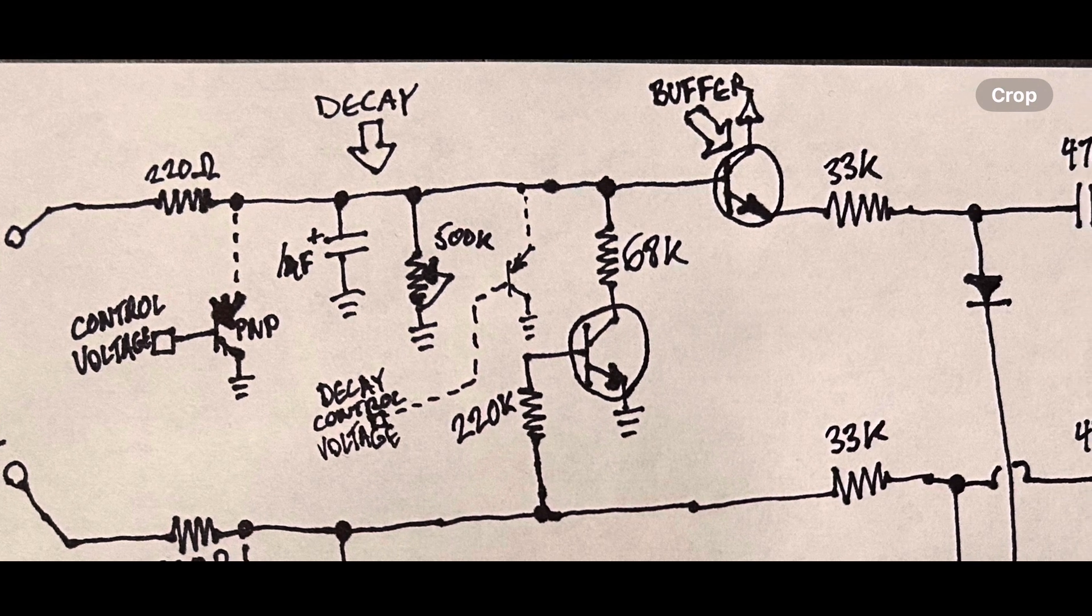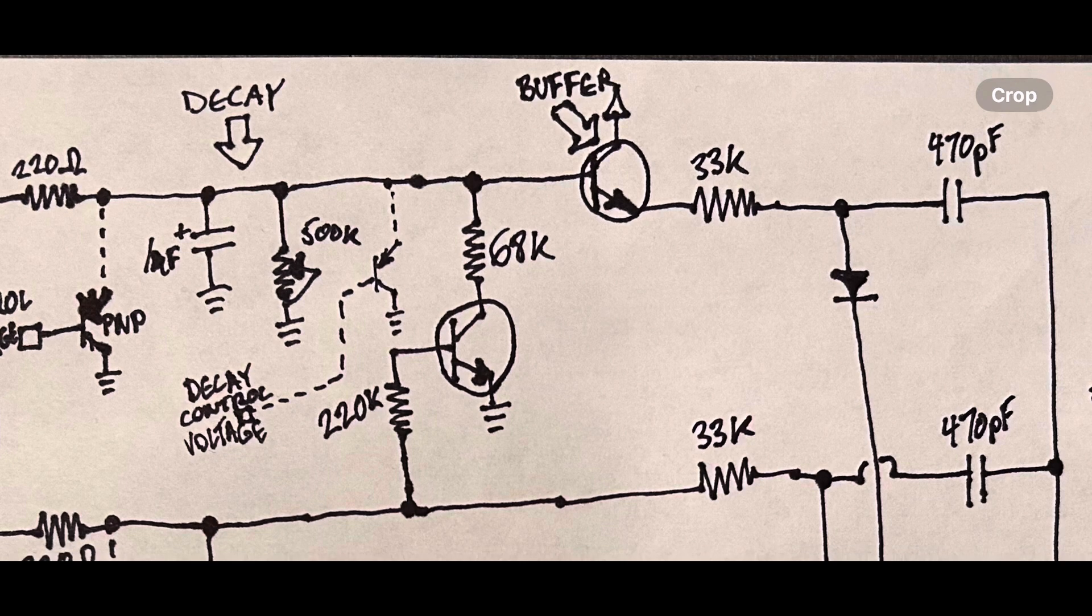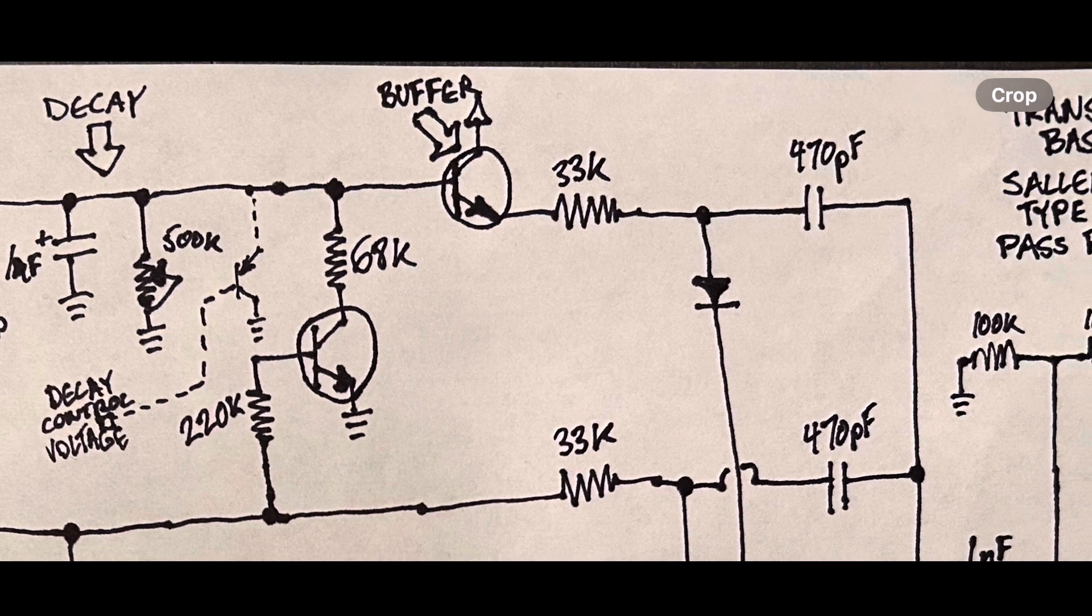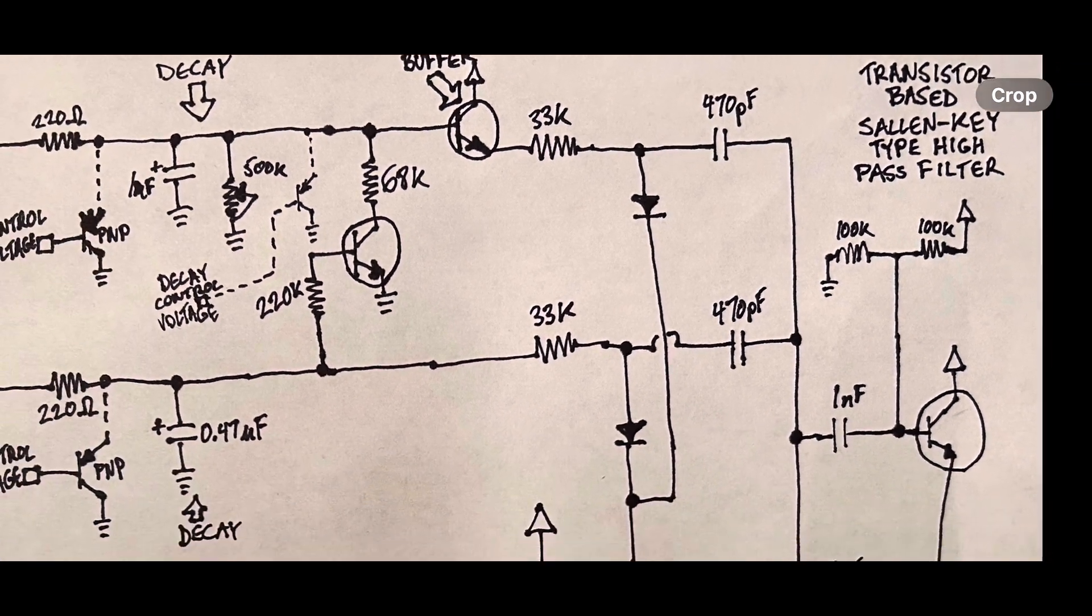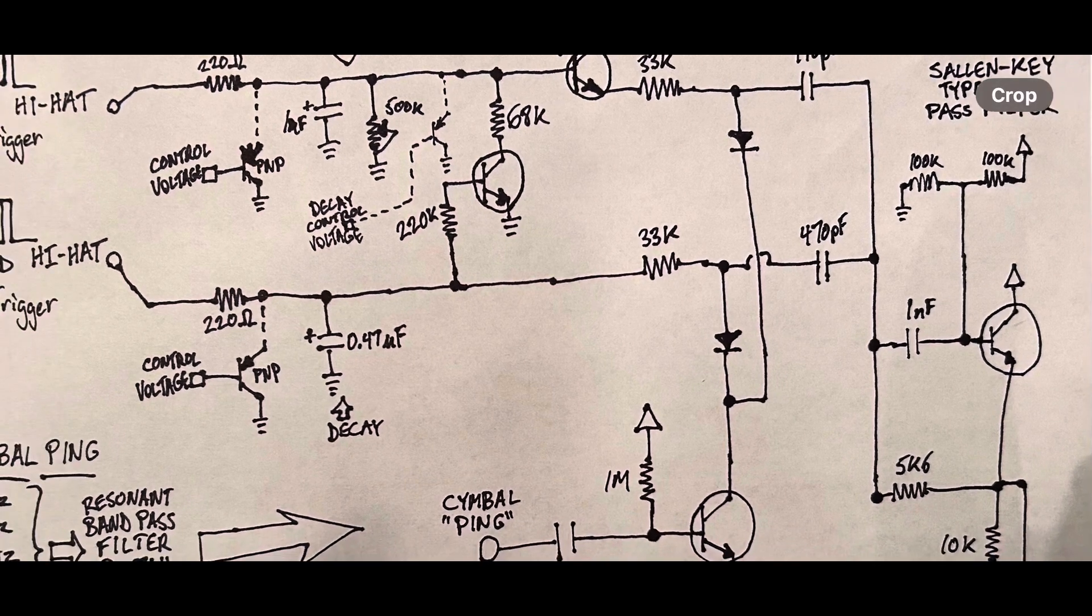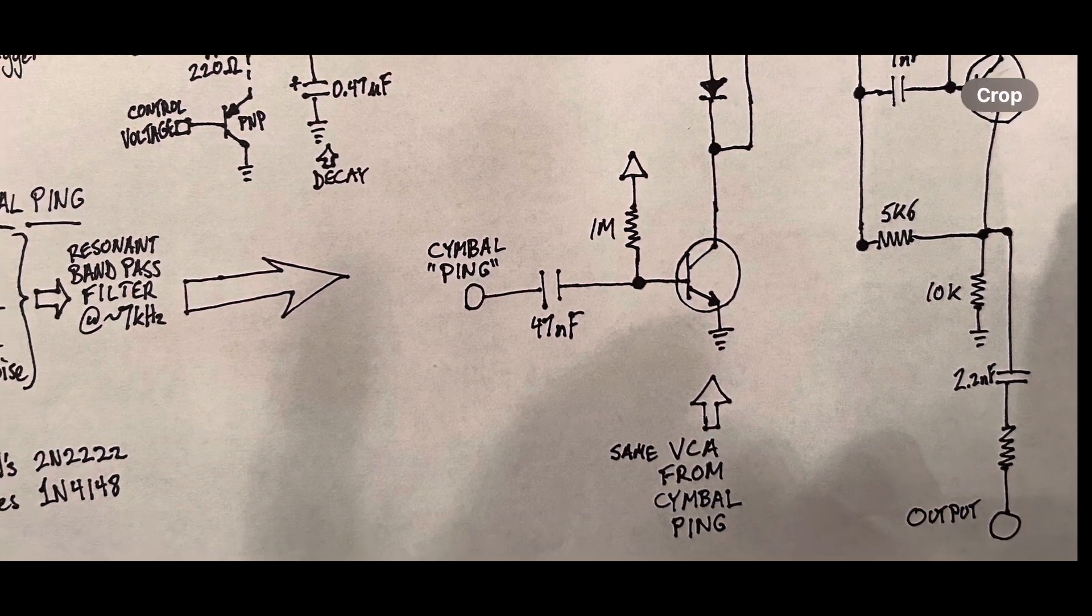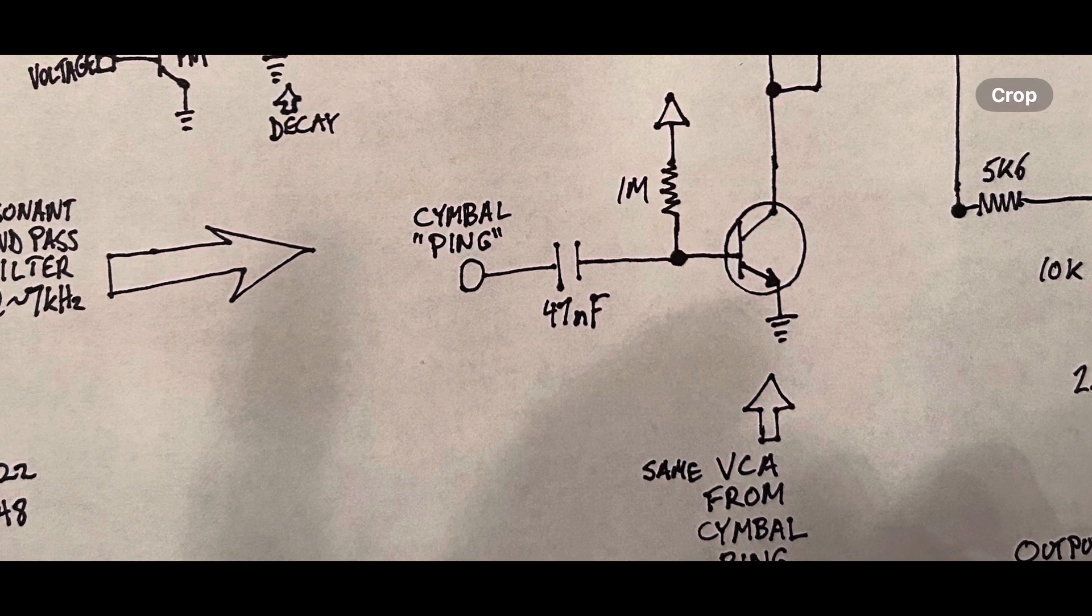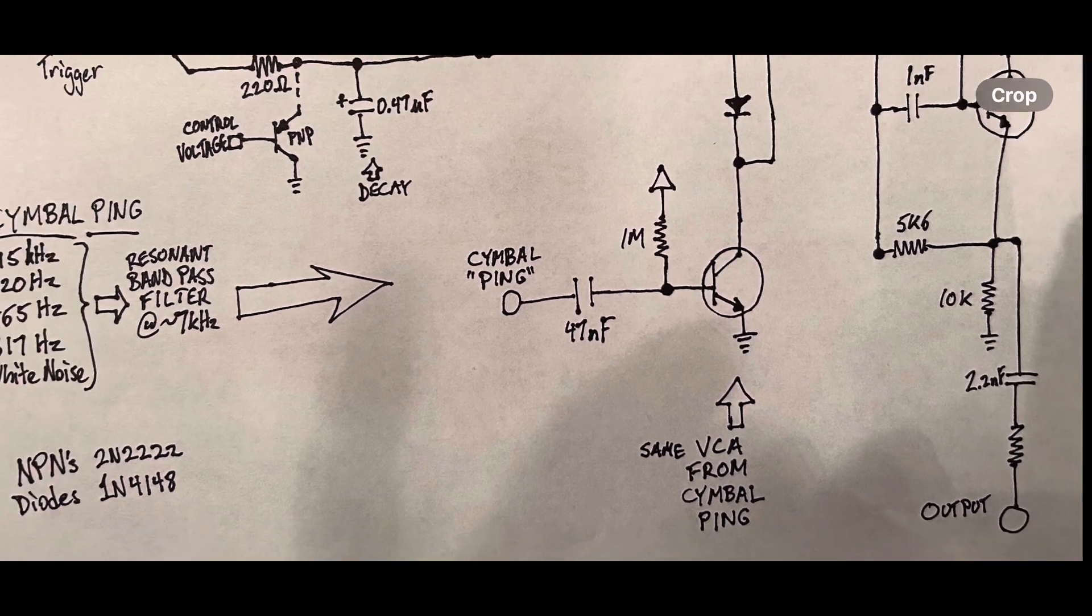That output is sent into the exact same VCA as for the closed hi-hat voice. There is a separate transistor in between the two circuits that allows the open hi-hat to be closed when a closed hi-hat signal comes in. The VCA is the exact same VCA.